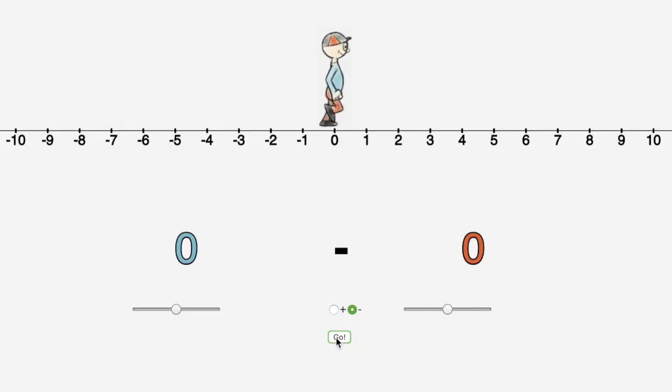Here is a number line with a student. Let's call him Stefan. Here he is looking in the positive direction. Now he is looking in the negative direction.